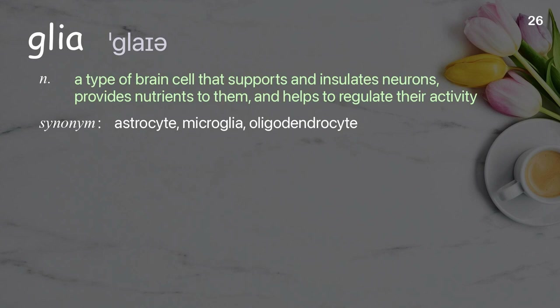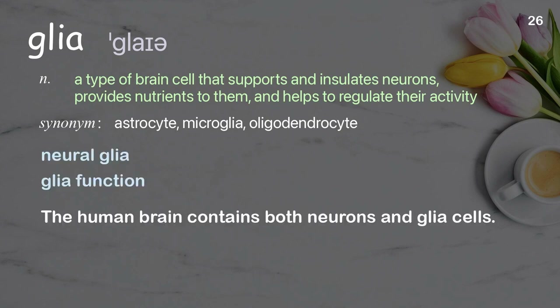Glia: a type of brain cell that supports and insulates neurons, provides nutrients to them, and helps to regulate their activity. Examples: Neural glia. Glia function. The human brain contains both neurons and glia cells.